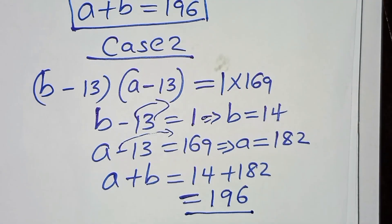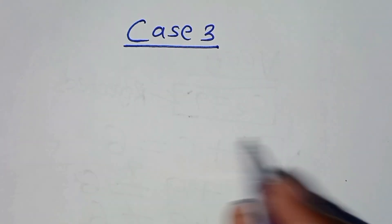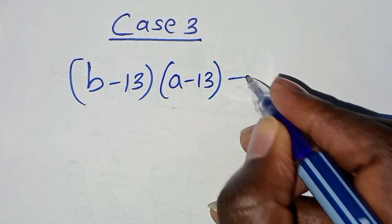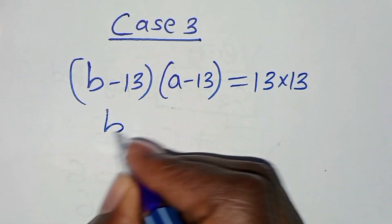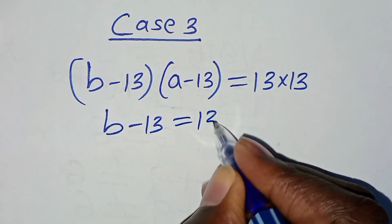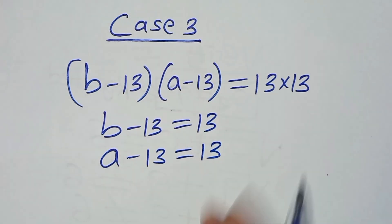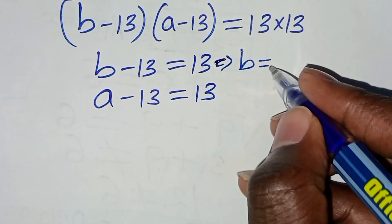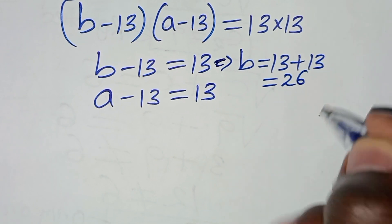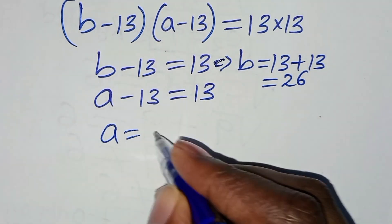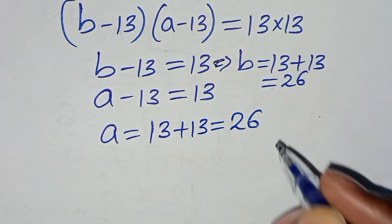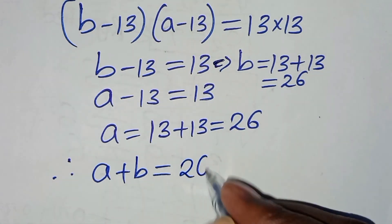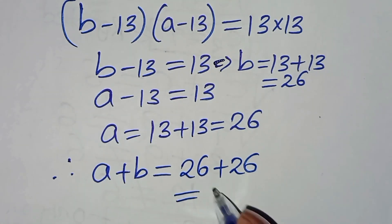Case 3: (B minus 13)(A minus 13) equals 13 times 13. So B minus 13 equals 13, giving B equals 26; and A minus 13 equals 13, giving A equals 26. Therefore A plus B equals 26 plus 26, which equals 52.